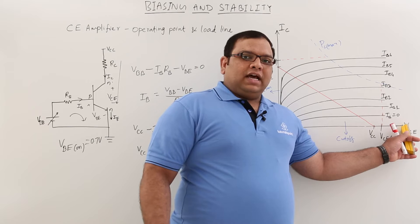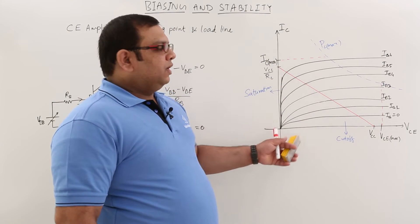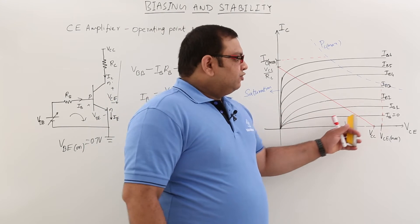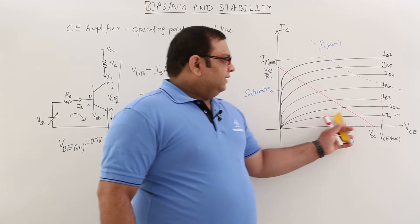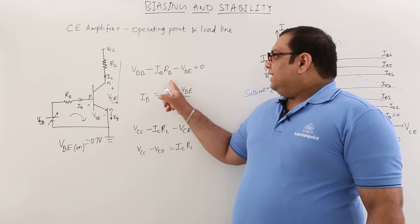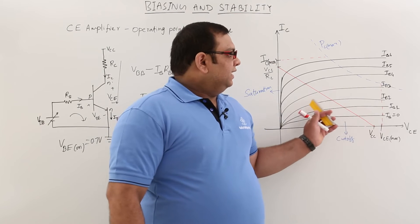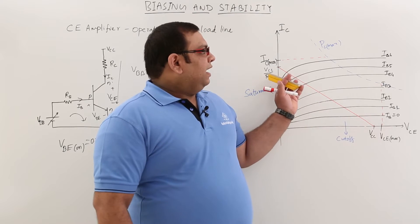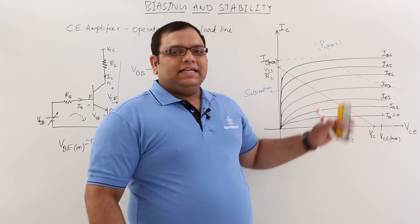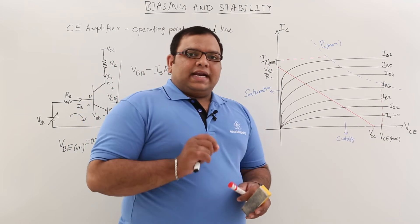IC is the collector current (output current) and VCE is the output voltage across the collector-emitter. The graph between output current and output voltage is called the output characteristics. We draw this graph for different values of IB — starting with IB equal to 0, then increasing IB by changing VBB to get progressively higher IB values, each giving a different IC vs VCE curve.